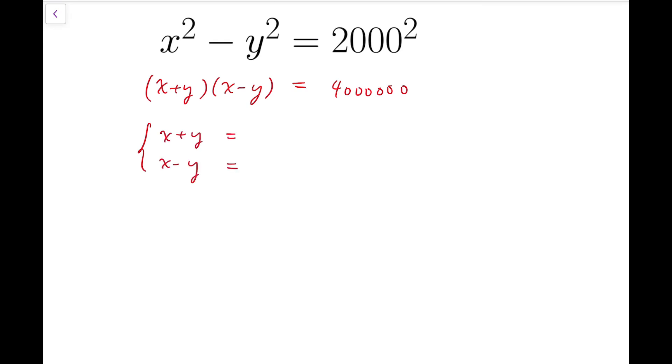I can establish a system of two equations with the numbers at the right hand side to be factors of 4 million, and when they multiply together, they should be exactly 4 million as well.